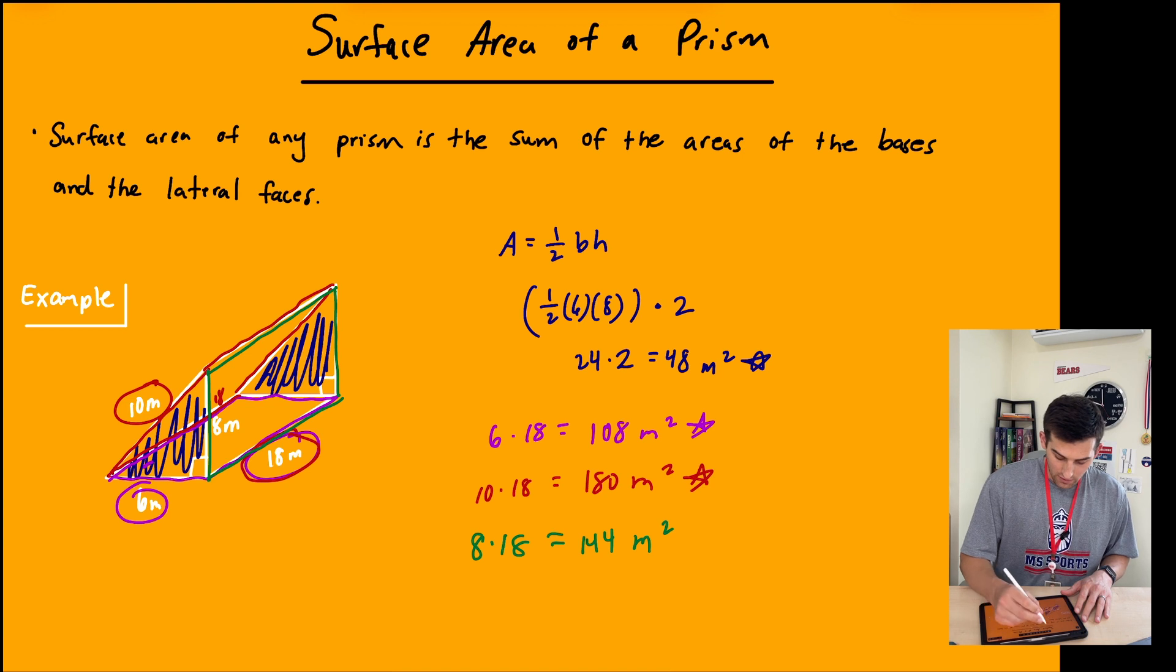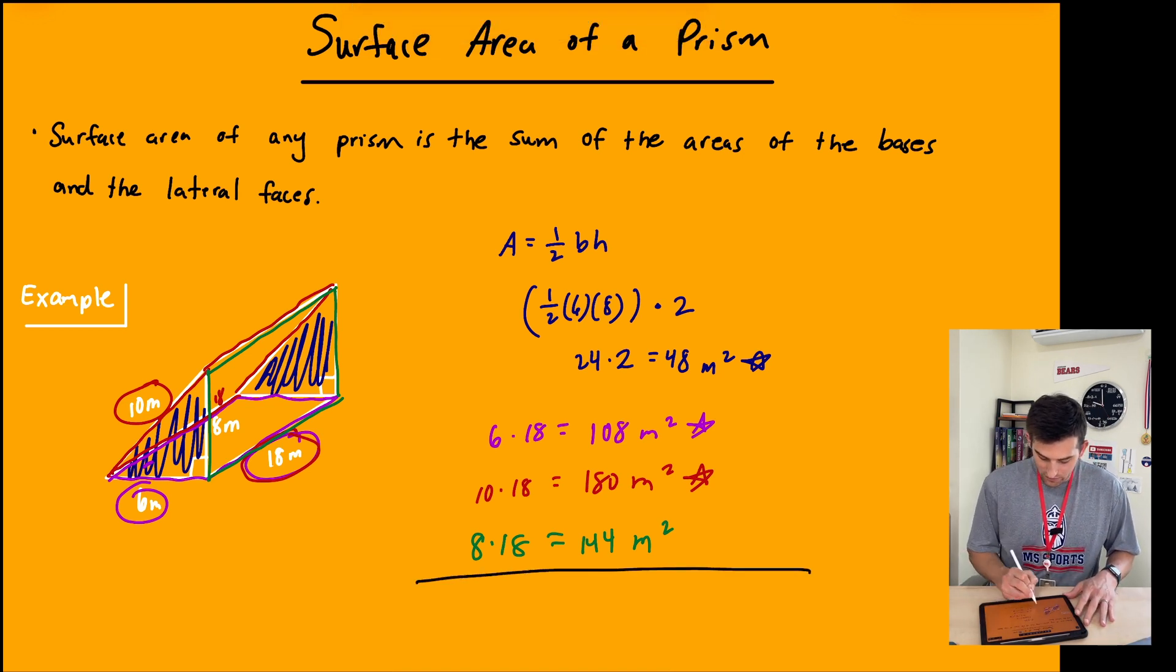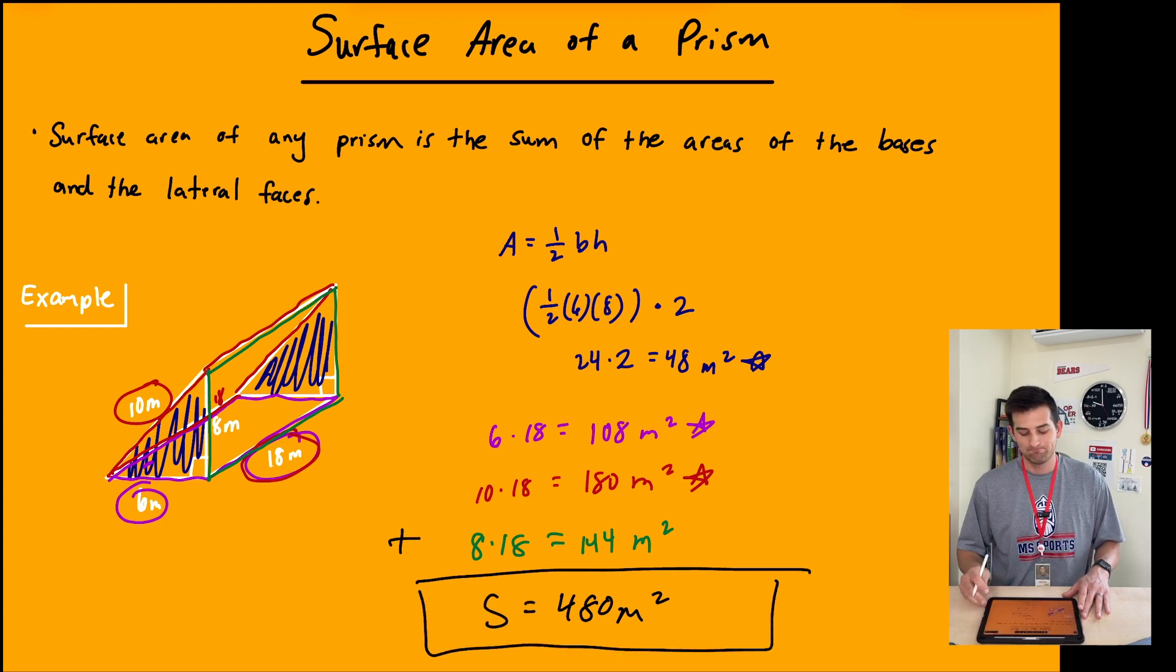Now we can add up those individual areas. That's 48 plus 108 plus 180 plus 144. That equals 480 square meters, and that's our surface area for this prism. And that's how you find the surface area of a prism.